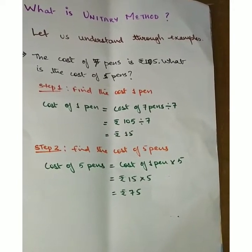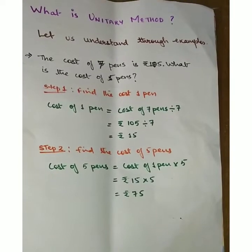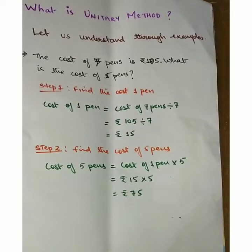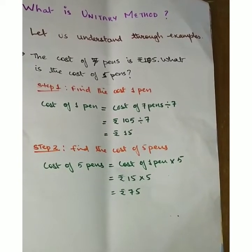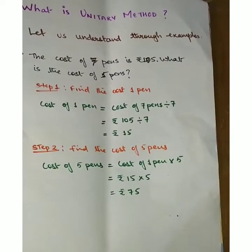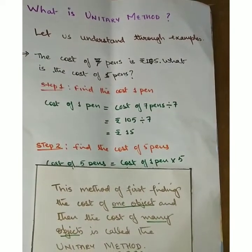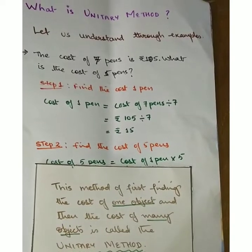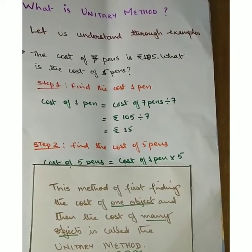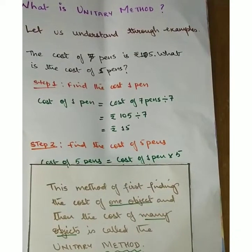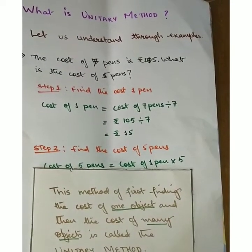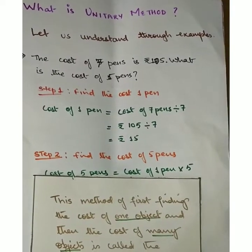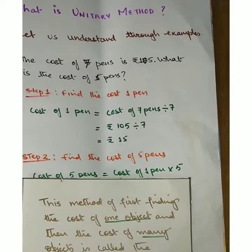First we found the cost of one pin, then we found the cost of five pins. This method is known as unitary method — the method of first finding the cost of one object and then the cost of many objects is called the unitary method.